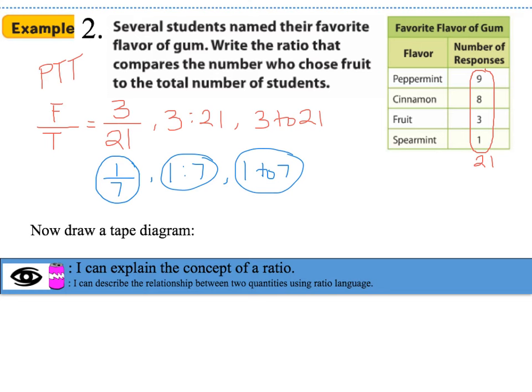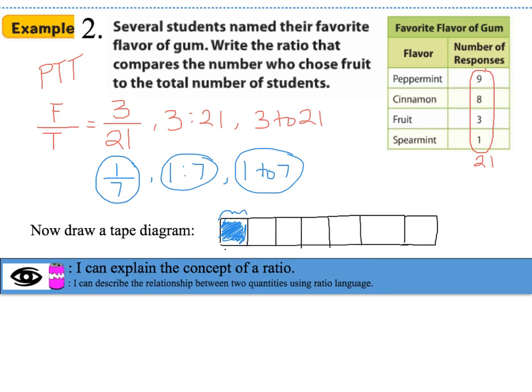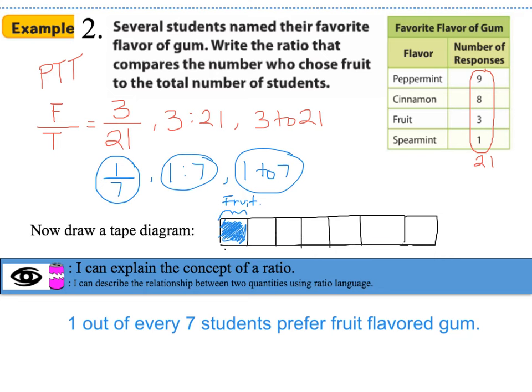For the tape diagram, I draw 7 equal boxes representing the total. Please make sure your tape diagrams are equally spaced. I shade one box to represent the fruit-flavored gum, and label it as fruit-flavored gum. The statement is: 1 out of every 7 students preferred fruit-flavored gum.